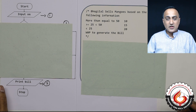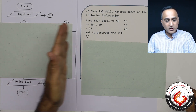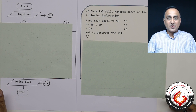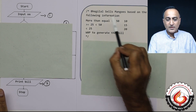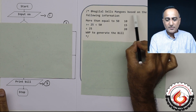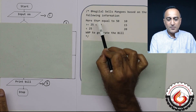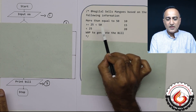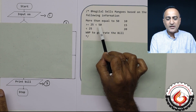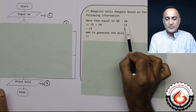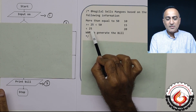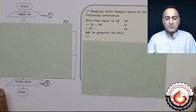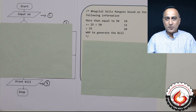In this particular transformation of a flowchart logic to a program, let us try to first understand what the problem is asking us to solve. It says that Bogilal sells mangoes based on the following information: if a person buys 50 or more mangoes, the rate charged is 10. If he buys between 25 and 50 (equal to 25 and less than 50), the price charged is 15 per mango. And if anybody buys less than 25, the price charged is 20 per mango. So we're going to take a look at how the flowchart is going to be transformed into a program.